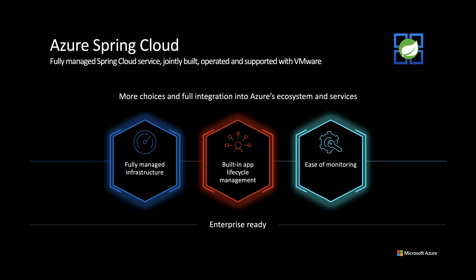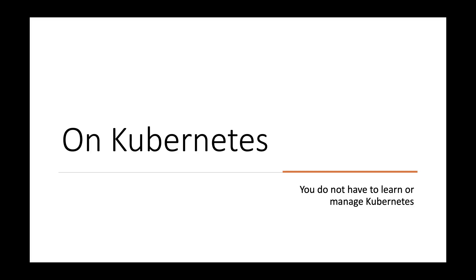You can simply deploy your JARs or code, and Azure Spring Cloud will automatically wire your apps with the Spring Service runtime. Once deployed, you can easily monitor application performance, fix errors, and rapidly improve applications. It's integrated into Azure's ecosystem and enterprise-ready. The service is jointly developed, operated, and supported by Microsoft and VMware. And the exciting part is you get the power of Kubernetes but you don't have to worry about learning or managing it.